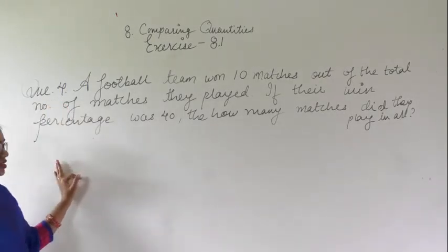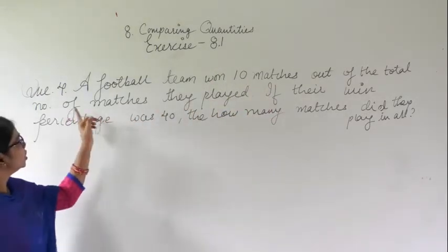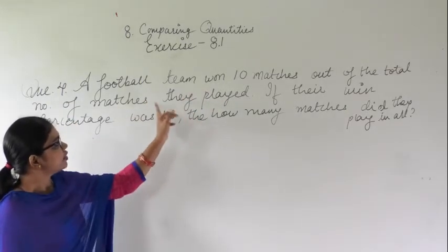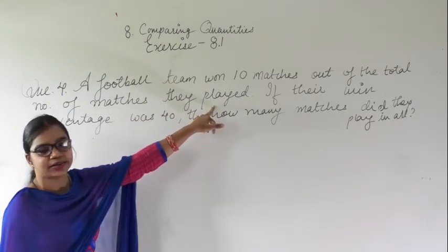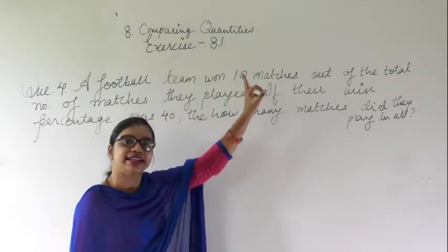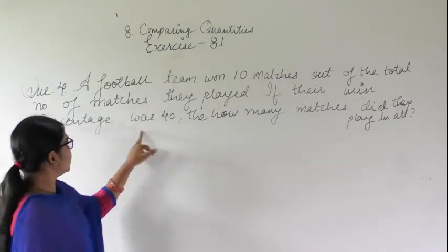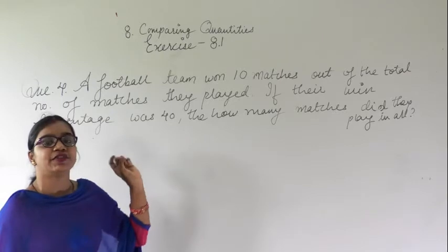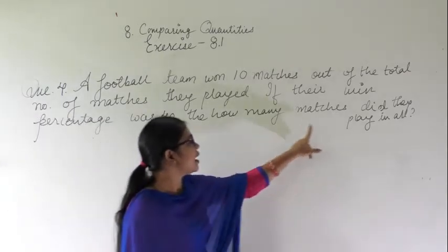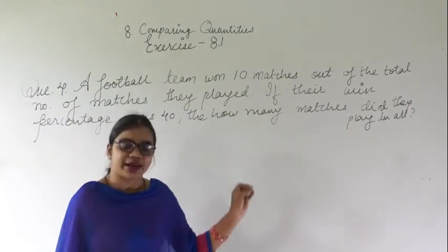In this question it says: a football team won 10 matches out of the total number of matches they played. The total number of matches they played is not given, but the number of matches they have won is 10. The win percentage is given as 40. Then how many matches did they play in all? You have to find out how many matches they have played in all.